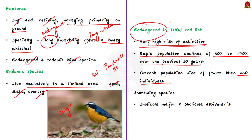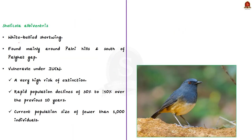The Nilgiri Blue Robin is also called Nilgiri Shortwing. But don't confuse it with the White-Bellied Shortwing. There are two subspecies of Shortwing distributed in the Western Ghats: Sholicola Major and Sholicola Albiventris. Sholicola Albiventris is the White-Bellied Shortwing, found mainly around Palani Hills, south of the Palghat Gap. The Nilgiri Shola Kili — Sholicola Major — is found in Shola forest mainly north of the Palghat Gap.